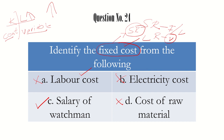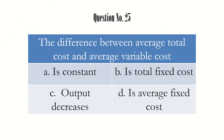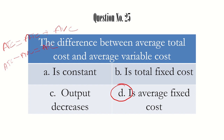Question number 25: what is the difference between average total cost and average variable cost? We know that average cost equals average fixed cost plus average variable cost. So average total cost minus average variable cost leaves us with average fixed cost. The answer is option D: average fixed cost.